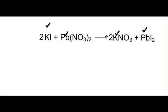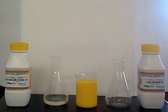We can check that this equation is balanced: two potassium on the left, two potassium on the right; two iodine on the left, two iodine on the right; one lead on the left, one lead on the right; two nitrate ions on the left and two nitrate ions on the right. So we have a balanced equation. The yellow precipitate that we see is the formation of lead iodide. Thank you very much for watching.